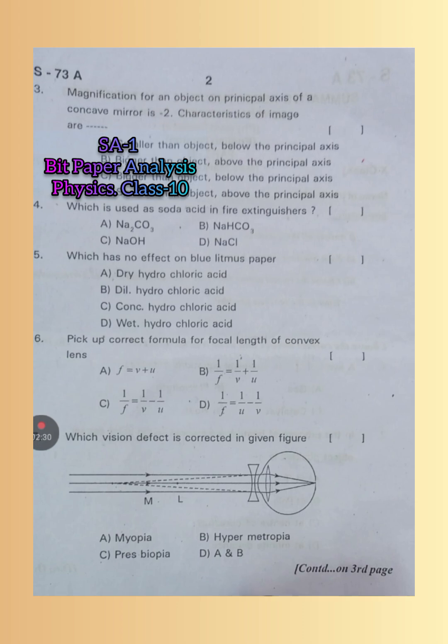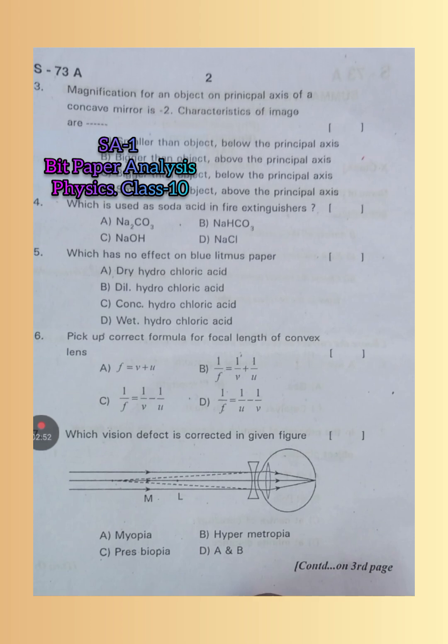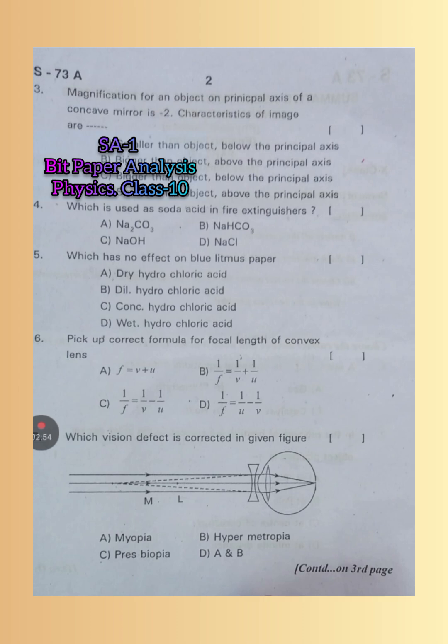Fifth one: Which has no effect on blue litmus paper? Dry hydrochloric acid, dilute hydrochloric acid, concentrated sulfuric acid, or wet hydrochloric acid. Dry hydrochloric acid, A is the right answer. Acids produce H+ ions in their aqueous solutions only.